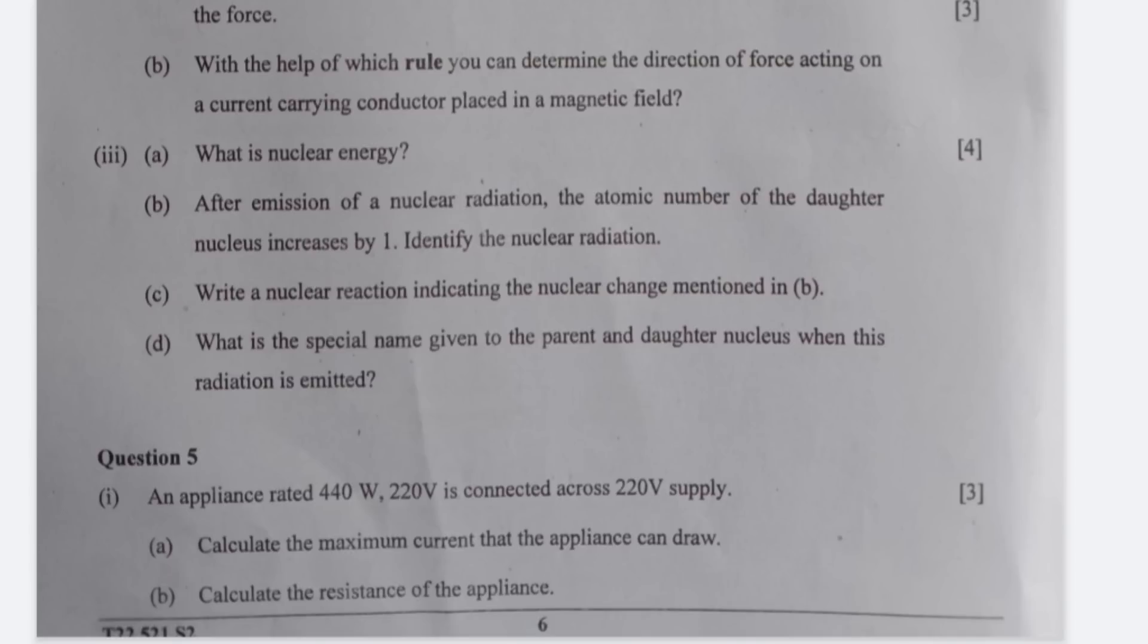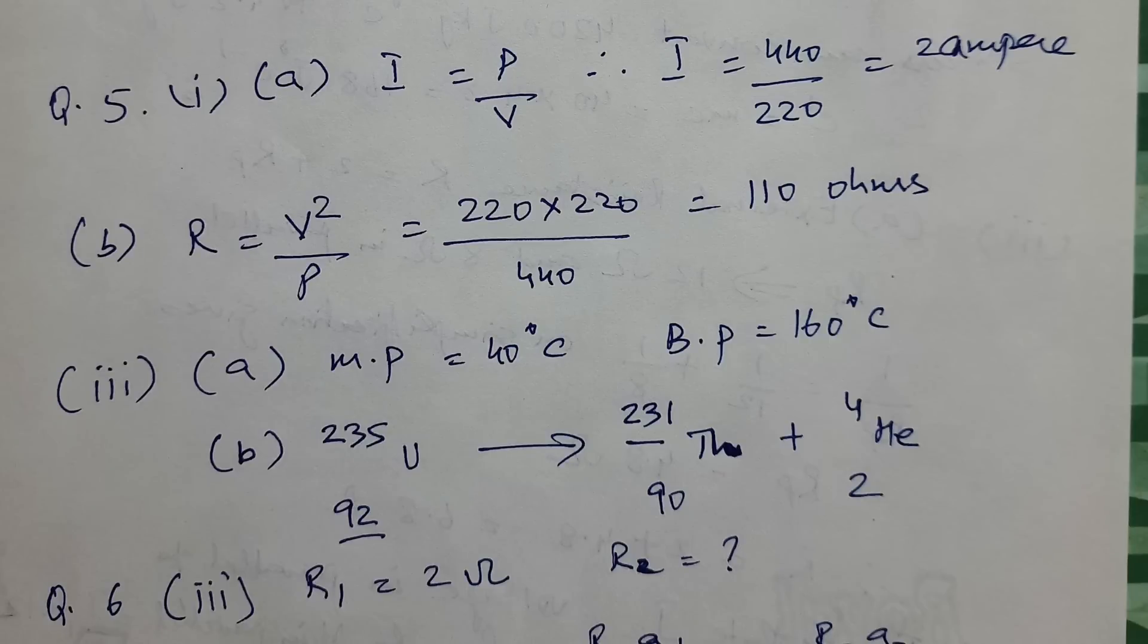Let us move to question number 5. This is the way you need to calculate the maximum current that the appliance can draw and calculate the resistance of the appliance that comes to 110 ohms.